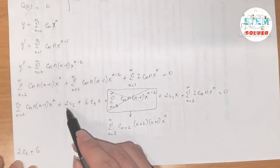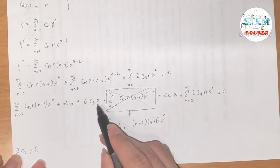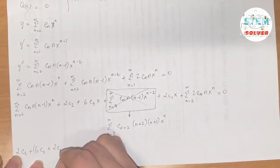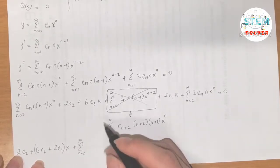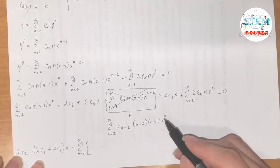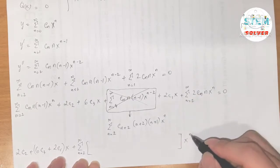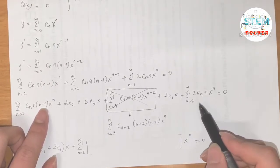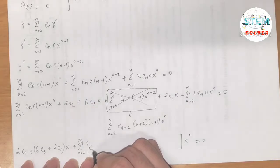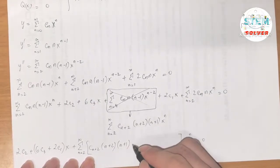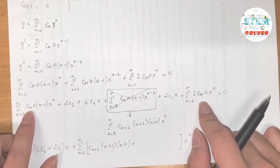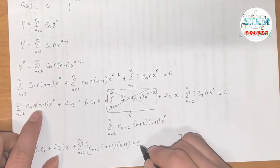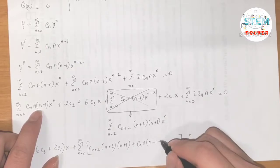Now combine like terms. For the x⁰ term: 2c₂. For the x¹ terms: 6c₃ + 2c₁, factoring out x gives (6c₃ + 2c₁)x. For the power series from n=2 to ∞, factor out xⁿ and combine coefficients inside brackets: c_(n+2)·(n+2)(n+1) + cₙ·n(n−1) + 2cₙ·n, which simplifies using n(n−1) + 2n = n(n+1).